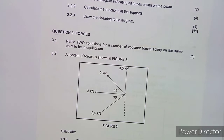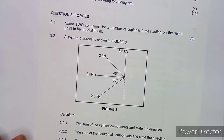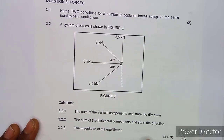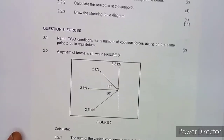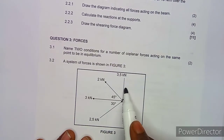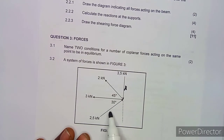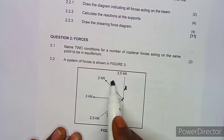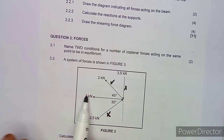Now on 3.2, that is where I want us to have major focus — the system of forces given. We are asked to calculate the sum of the vertical components, horizontal components, and the magnitude of the equilibrant. I always say your forces should be taken from a point, not towards the point. This force is going to the point, and this 2.5 kN is also approaching the point, which is incorrect.